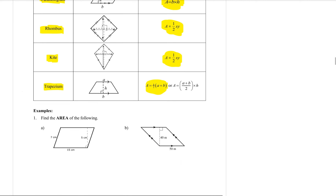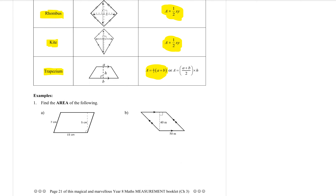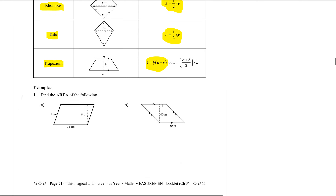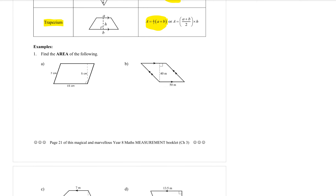So let's practise with some of those formulas. Example number one: find the area of the following. This shape here is a parallelogram. Remember that the formula for a parallelogram is base times height. The base and the height must always be connected by a right angle, so it's the 15 and the 5 that we want — this 7 is just there to distract us.